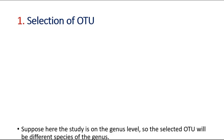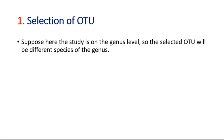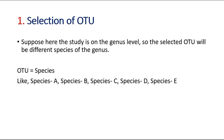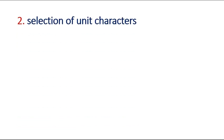Step 1 is the very first step — selection of OTU. Here the study is at the genus level, so the selected OTU will of course be the next lower level, which is species. So the OTU here is species. Suppose we select five different species: species A, B, C, D, and E.